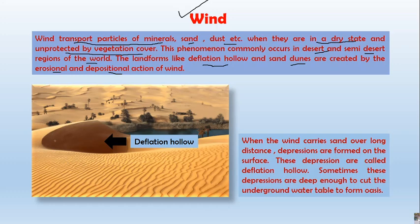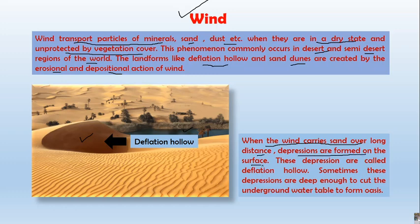A deflation hollow is a U-shaped depressed area in the desert. Adjoining the deflation hollow you can see a water body that represents an oasis. Oases are also formed when deflation hollows become very deep, cutting into the underground water table. When wind carries sand over long distances, depressions are formed on the surface called deflation hollows; sometimes these are deep enough to reach the underground water table and form oases.